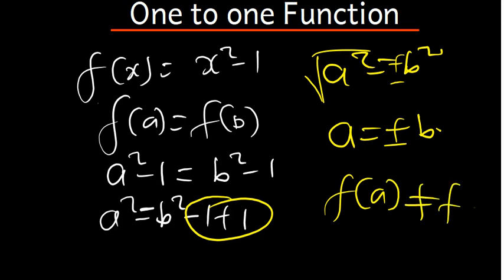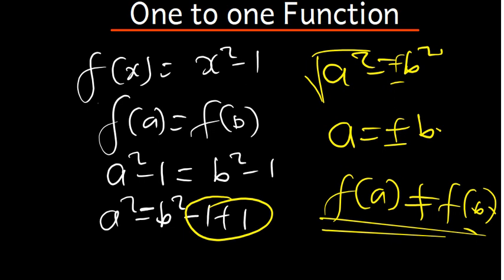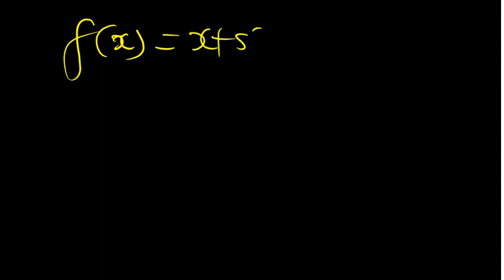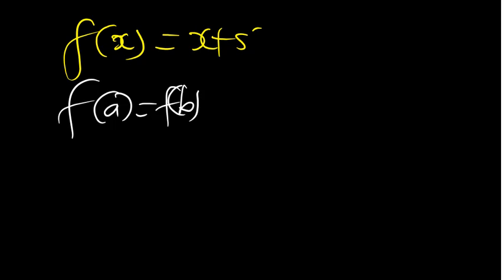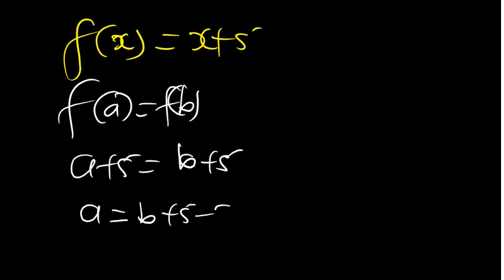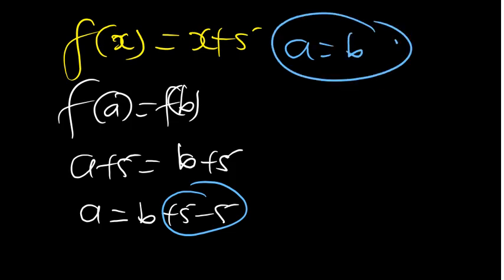Let's have another example: f(x) = x + 5. Let's see if this function is one-to-one. A function is one-to-one if f(a) = f(b). Substituting, we get a + 5 = b + 5. Shifting five to the other side: a = b + 5 - 5, and those cancel to give a = b. So this function is one-to-one.